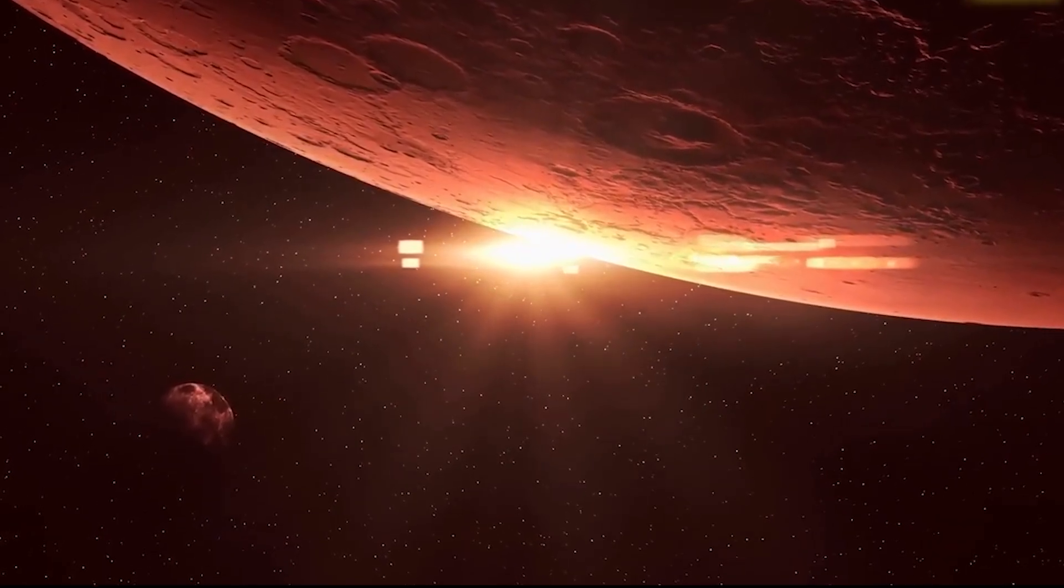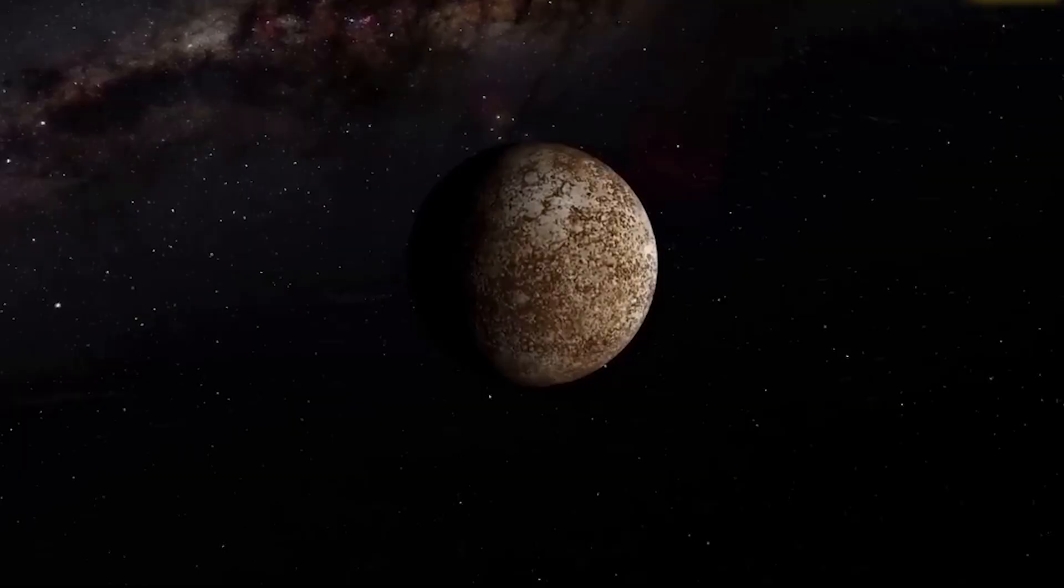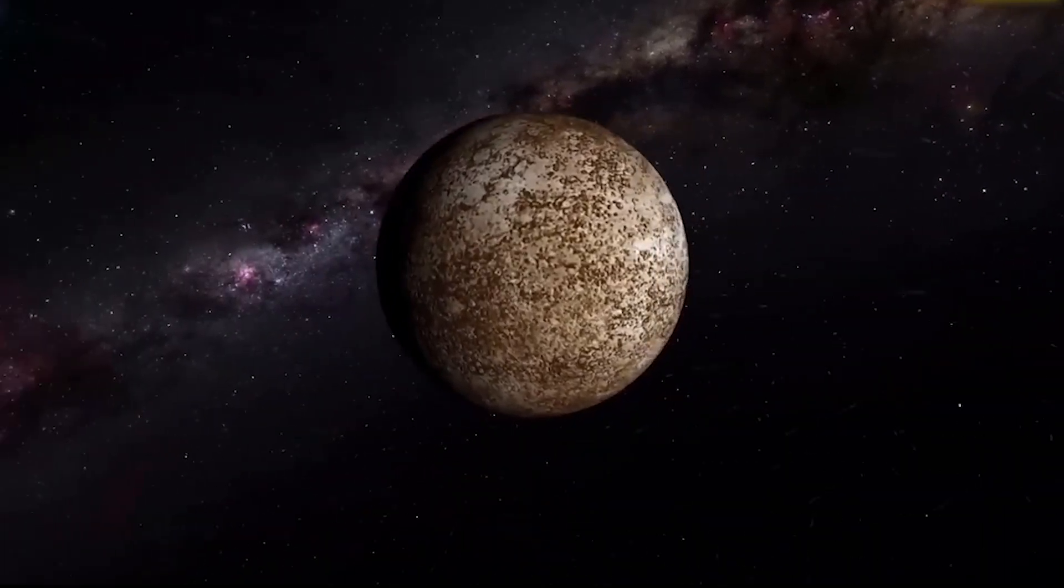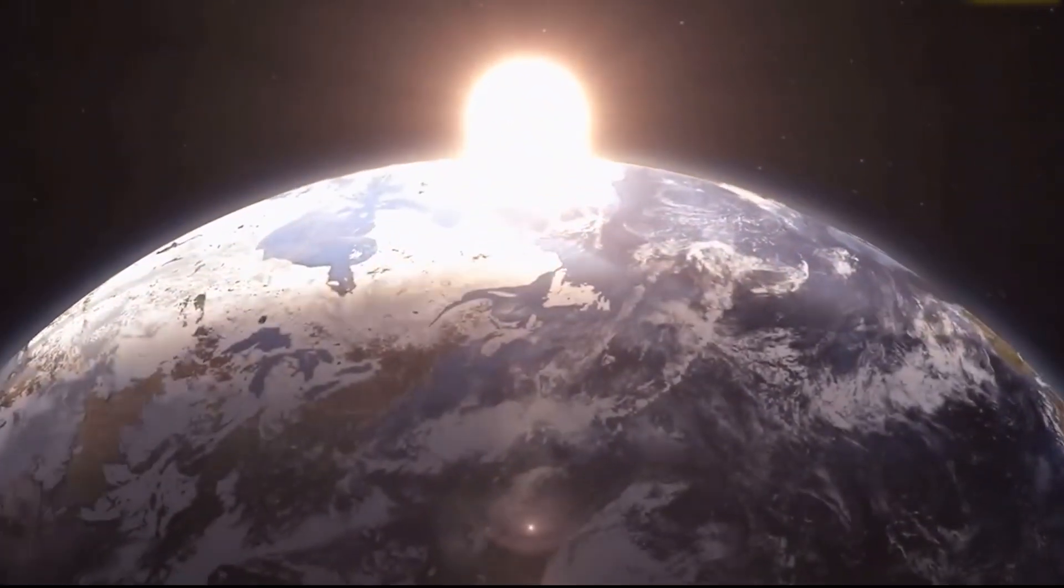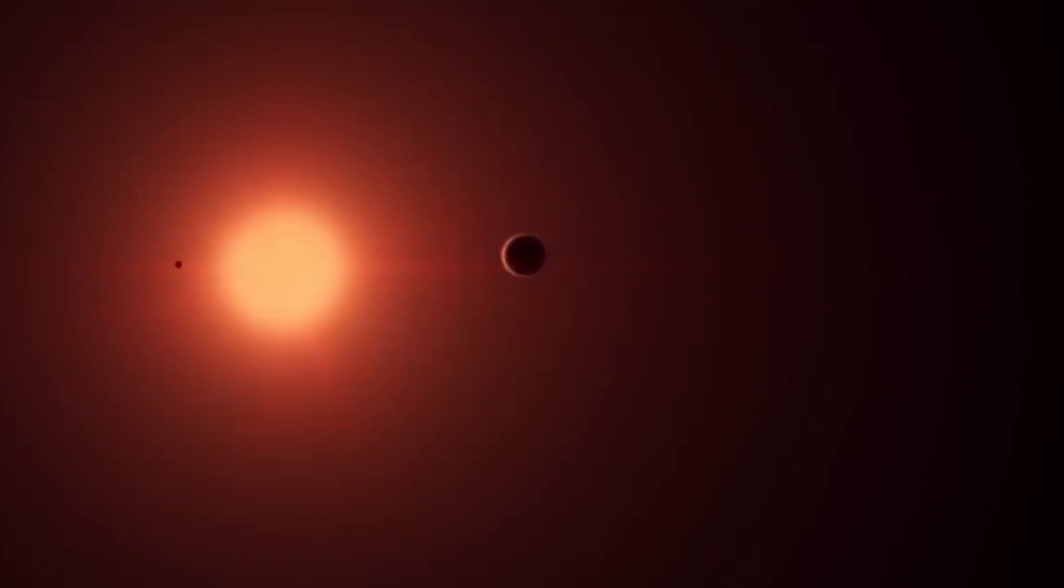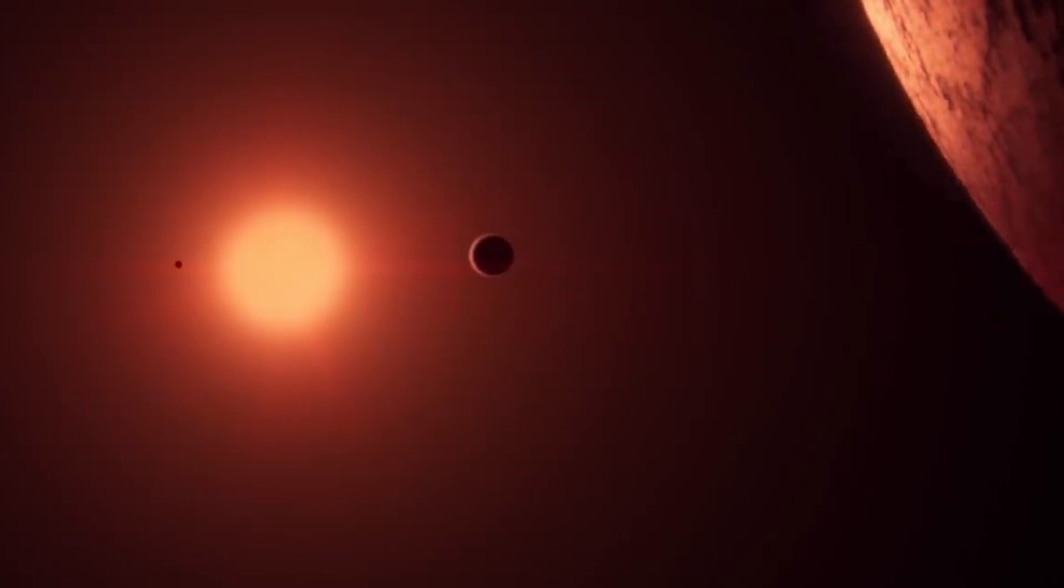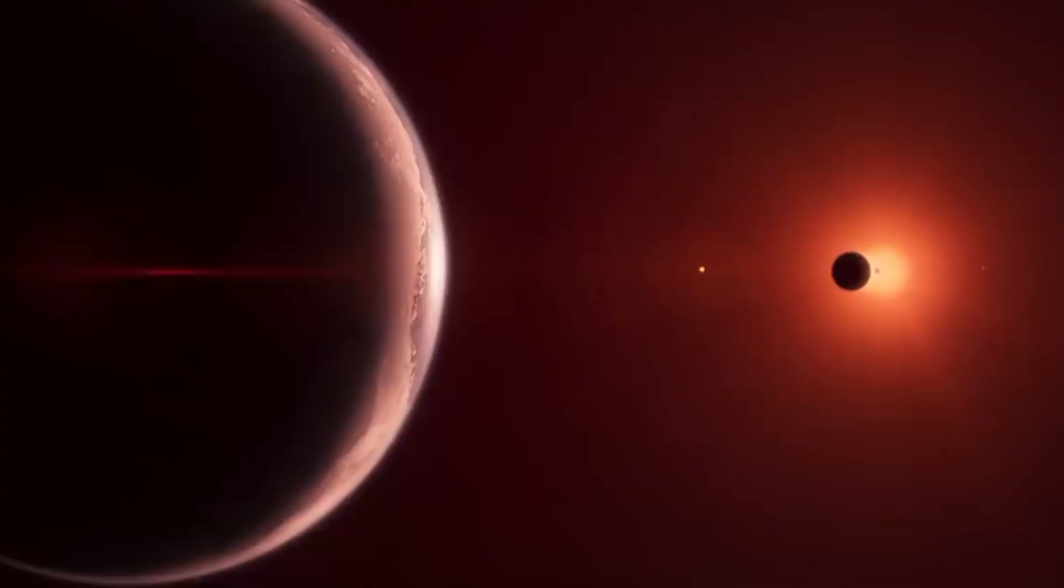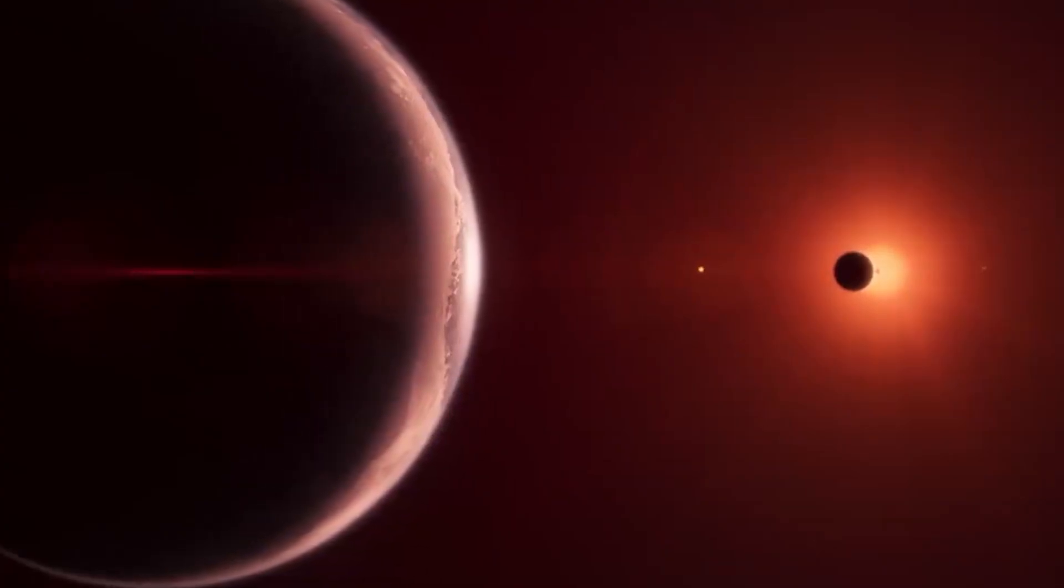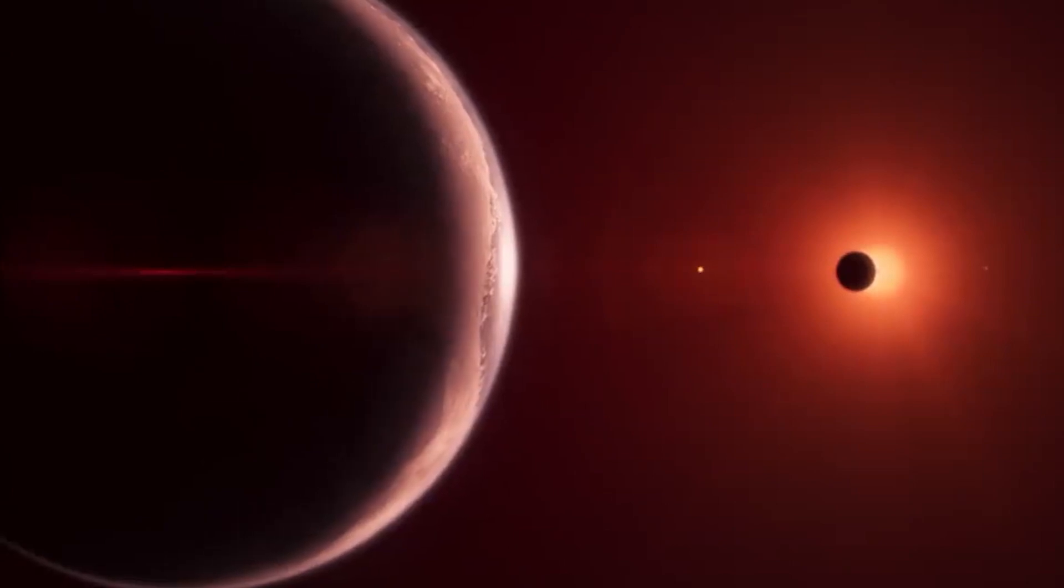Kepler's Second Law, the Law of Equal Areas, states that a line connecting a planet to the sun, called the radius vector, sweeps out equal areas in equal intervals of time. This means that even though planets travel at different speeds in different parts of their orbits, they cover the same amount of space in the same amount of time. When a planet is closer to the sun it moves faster, and when it is farther away it moves slower.